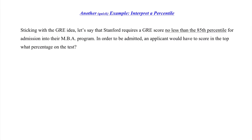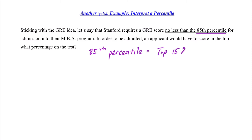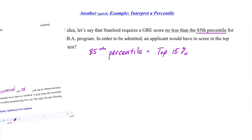Let's look at another quick example. Sticking with the GRE, let's say Stanford requires a GRE score no less than the 85th percentile for admission into their MBA program. In order to be admitted, an applicant would have to score in the top what percentage on the test? If we're in the 85th percentile, then we must be in the top 15%, which we get simply by taking 100% minus 85%.